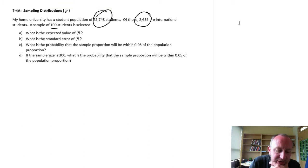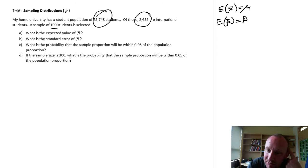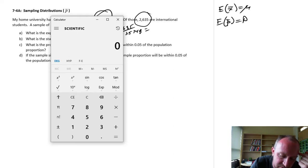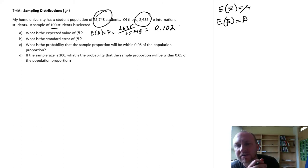So first part A, what is the expected value of p bar? Well, just like when we're working with means and we had sample means, the expected value of the sample mean is mu. Similarly, the expected value of the sample proportion is going to equal the population proportion as well. And here we have enough information that we can figure out what that is. I've got 2,635 students out of 25,748. So the expected value of p bar is 2,635 divided by 25,748, and I get 0.102. So this means about a little over 10 percent of the student population consists of international students.